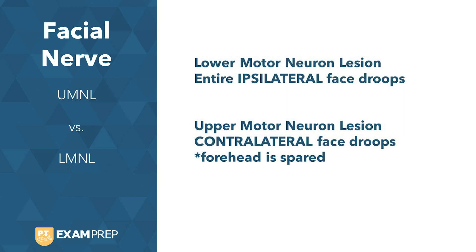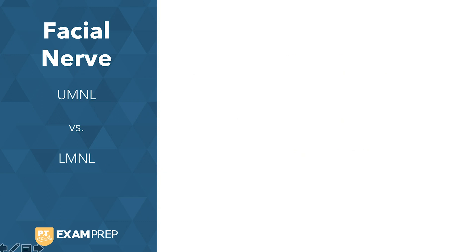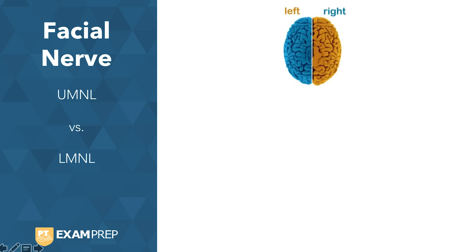But do many of you know why this happens? I'm going to explain it to you. So first we have our two hemispheres — left and right — and if we look at our brainstem's three components: the midbrain, pons, and medulla, we can put this all together.